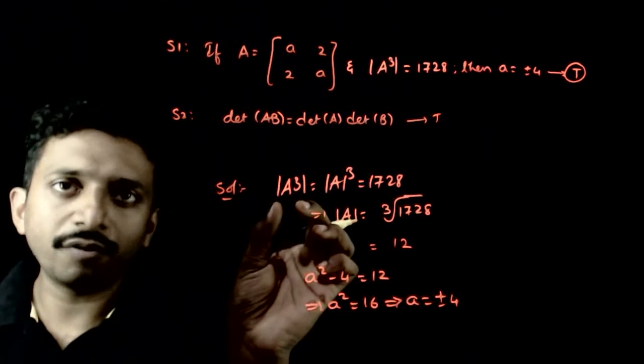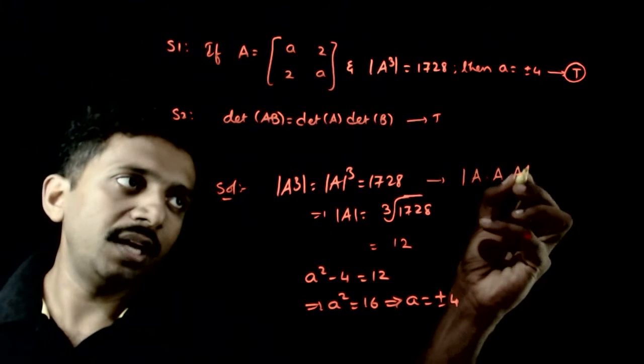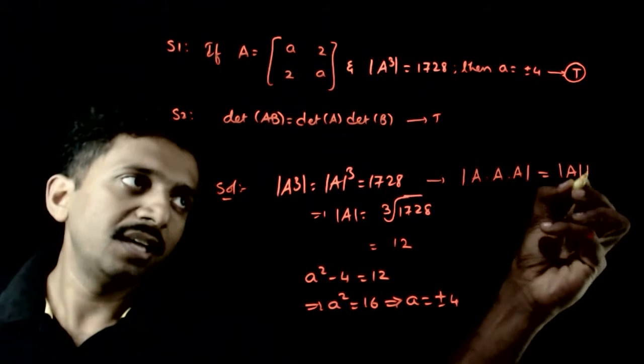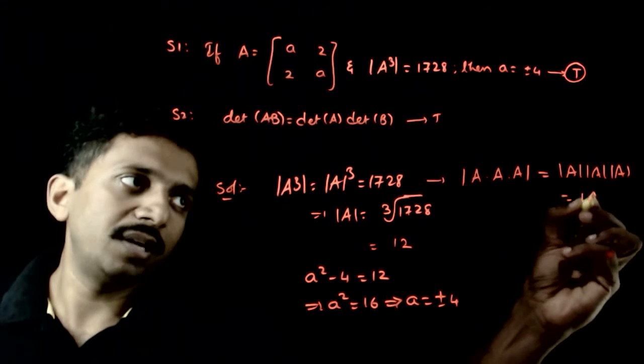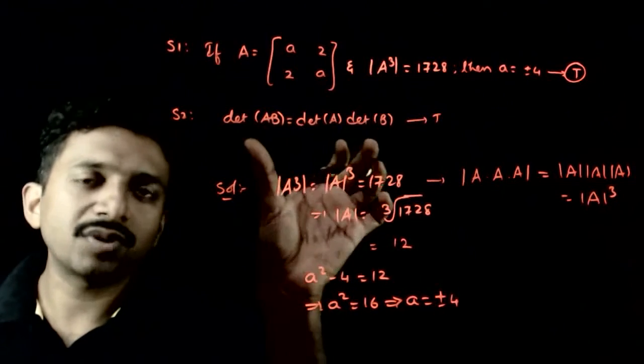We used this concept: det(A³) equals det(A × A × A), which can be written as det(A) × det(A) × det(A) = (det A)³. So det(A³) = (det A)³ comes from this formula.